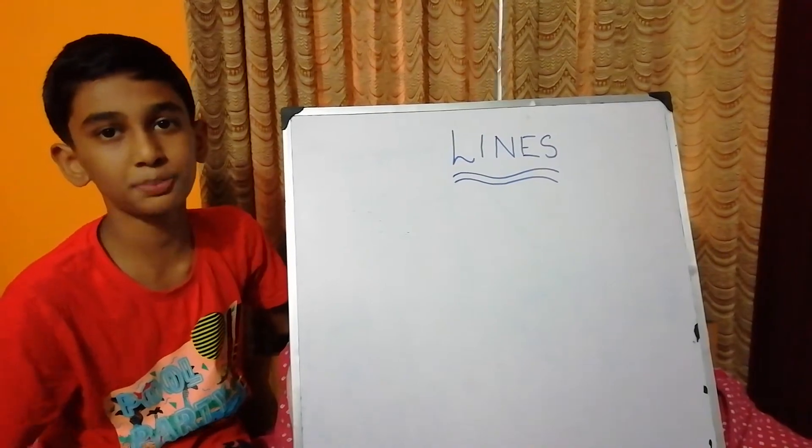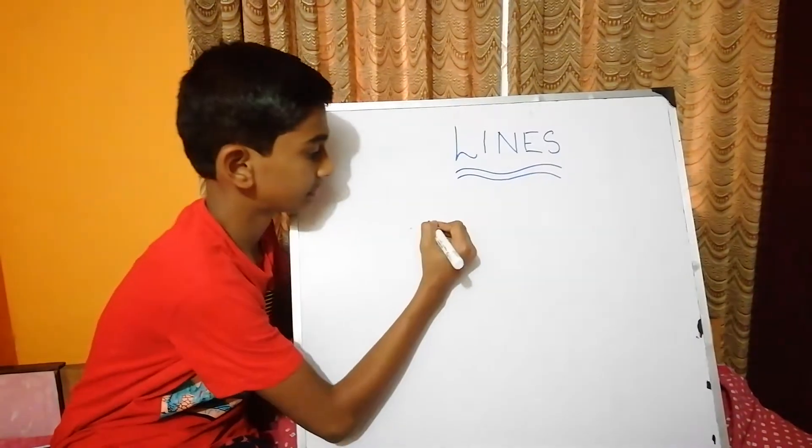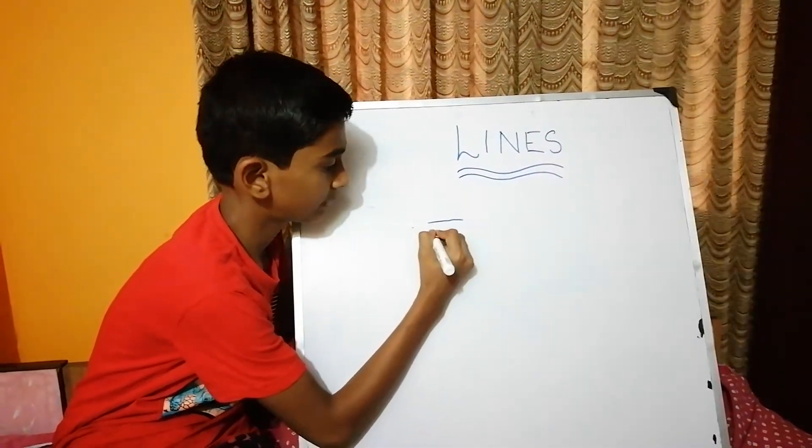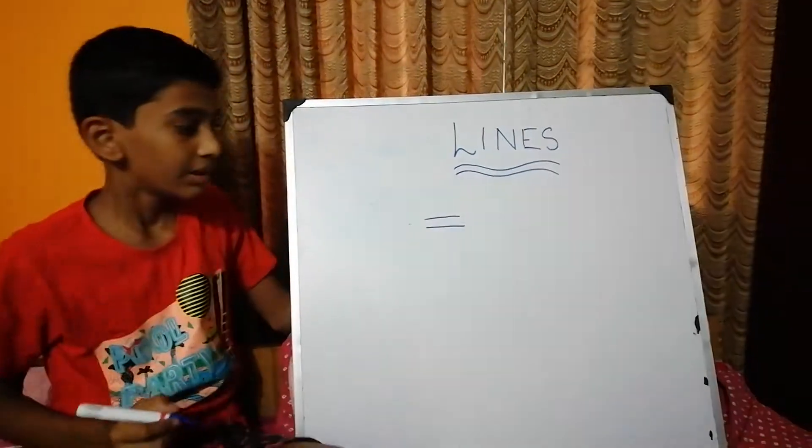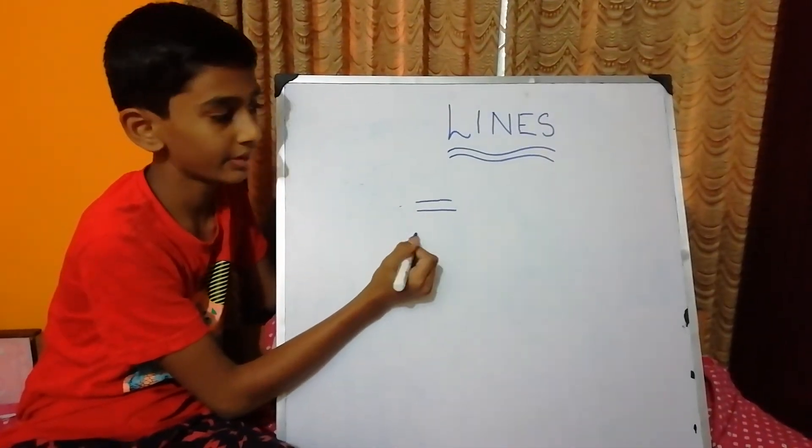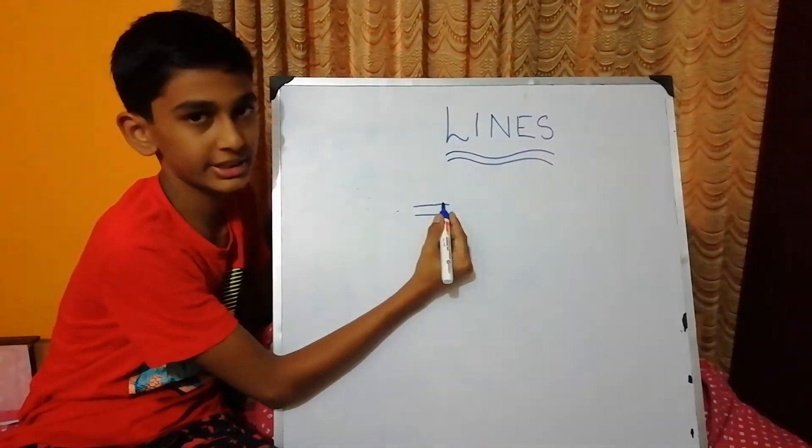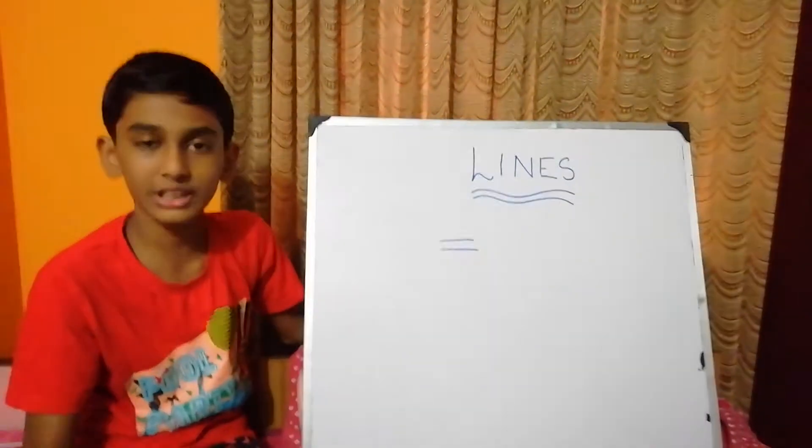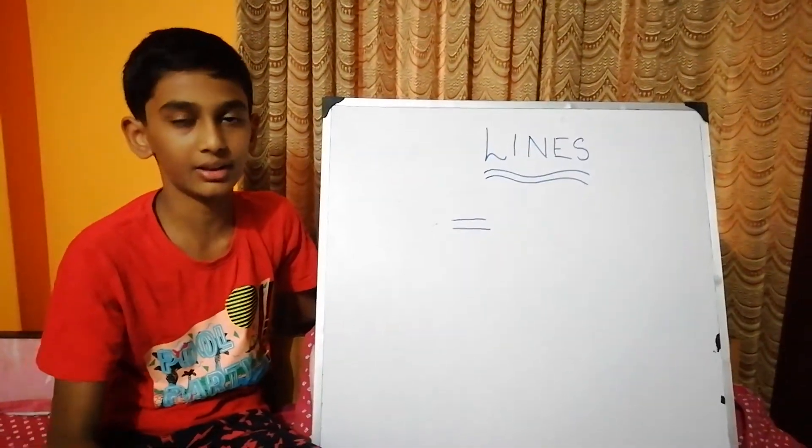The fourth type is parallel lines. These two lines never meet each other and never touch each other. So, these are called parallel lines.